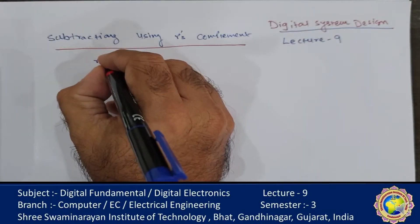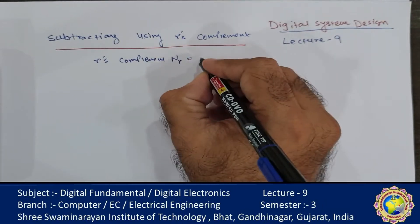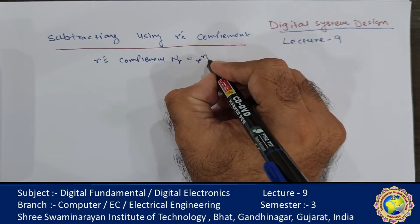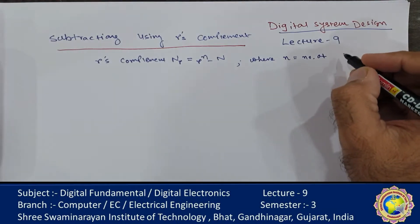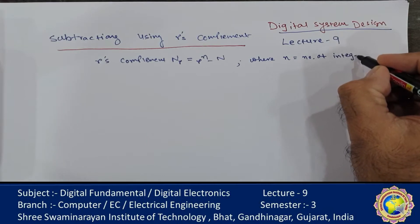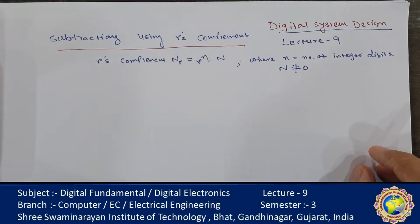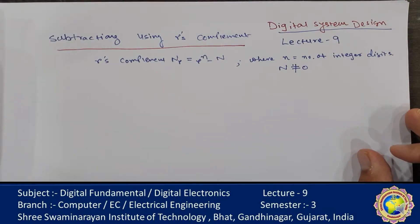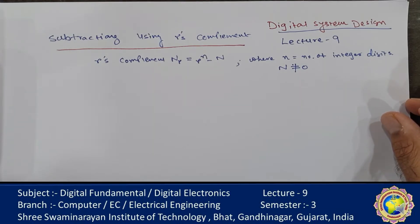The r's complement of any number N is equal to r raised to n minus N, where small n is the number of digits in the integer part, and N is never equal to 0. These two conditions are used to find the r's complement. Today we discuss the direct method of subtraction, which in elementary school uses the borrow concept — where we borrow a 1 from a higher significant position when the minuend digit is smaller than the corresponding subtrahend digit. In this situation the answer is negative.